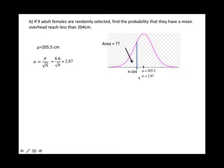Given x, find the area using normalcdf, starting from the lower value of -1E99 to 204, then state the mean and standard deviation. For the standard deviation, don't put 2.87 — put the whole formula. You should get 0.3003.